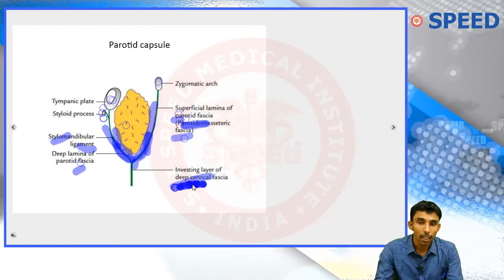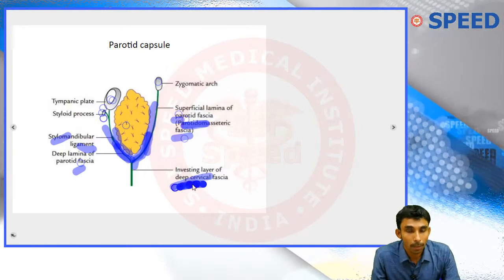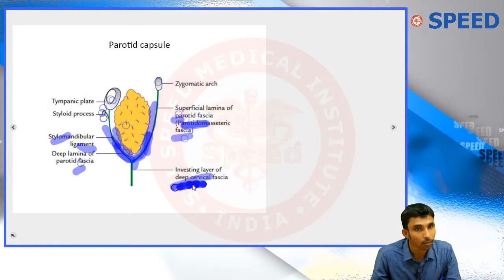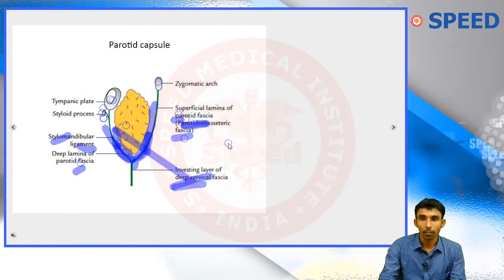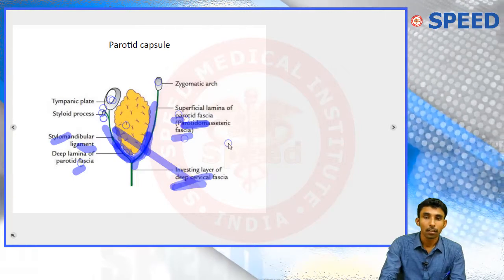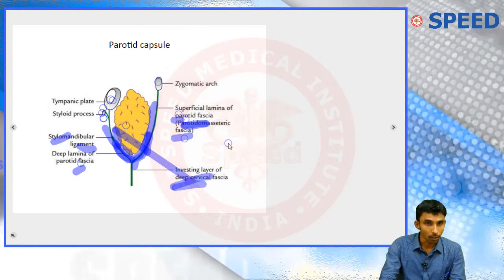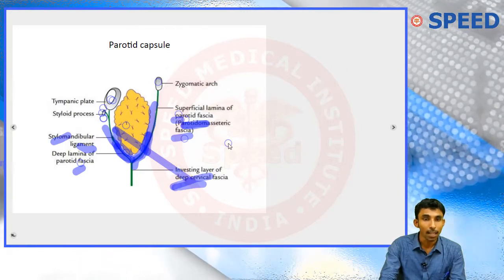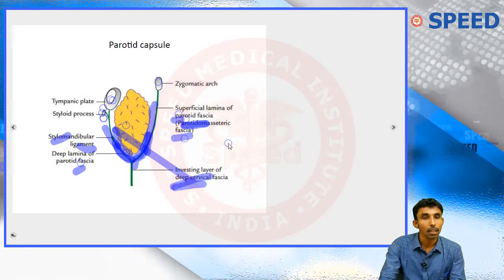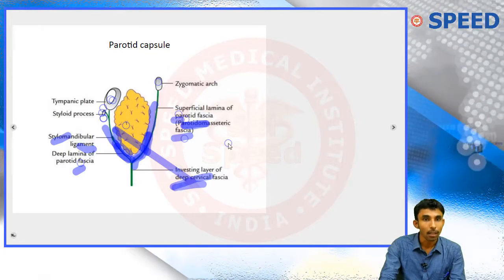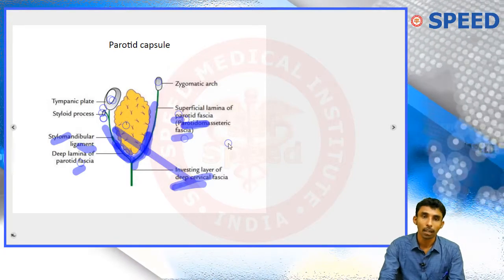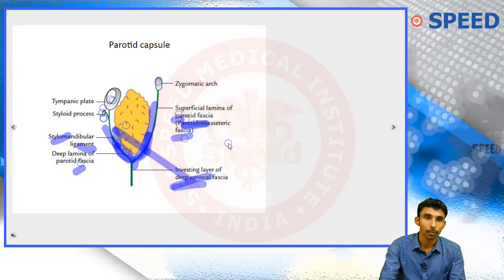The parotid fascia is derived from the investing layer of the deep cervical fascia — the deep fascia of the neck, where 'cervical' refers to neck. The deep cervical fascia has three layers from superficial to deep: the investing layer, the pre-tracheal layer, and the pre-vertebral layer.